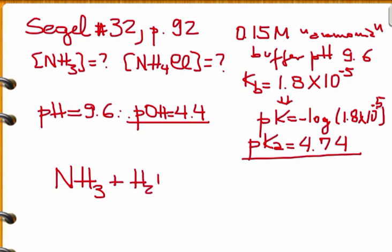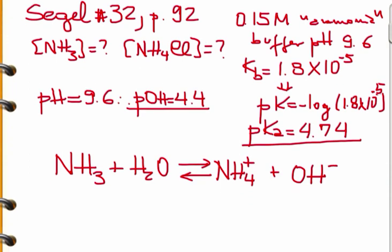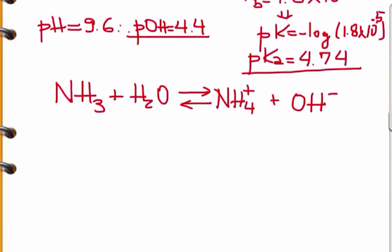We'll write the equation: ammonia (NH3) with water in equilibrium with NH4+ plus hydroxide. It's more convenient to include water in the equation for this type of problem.